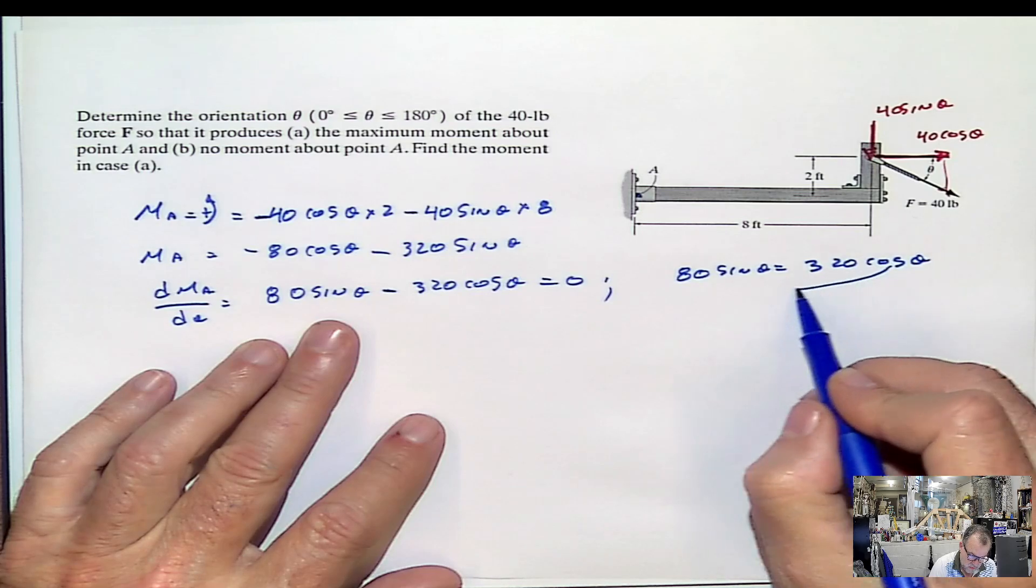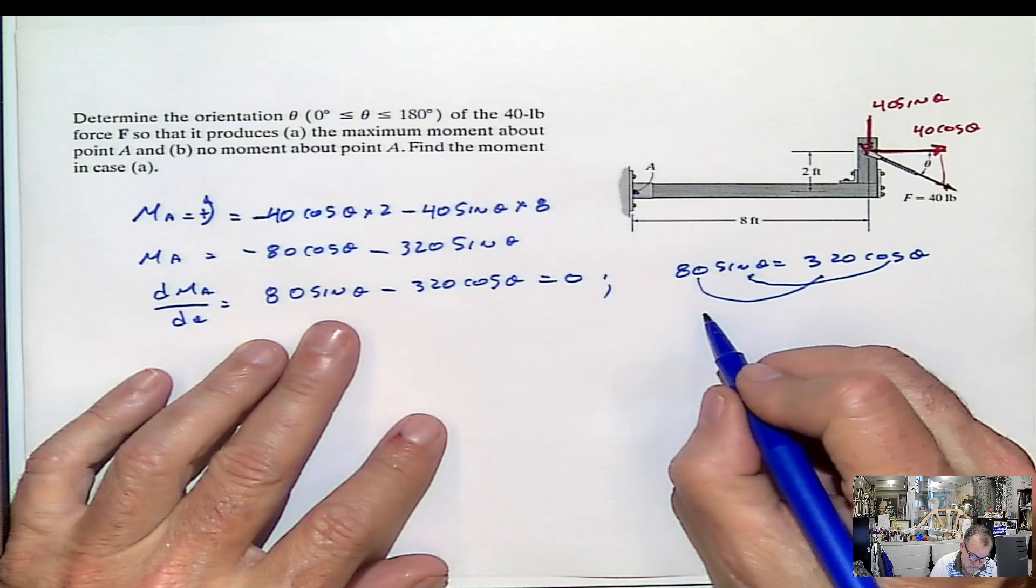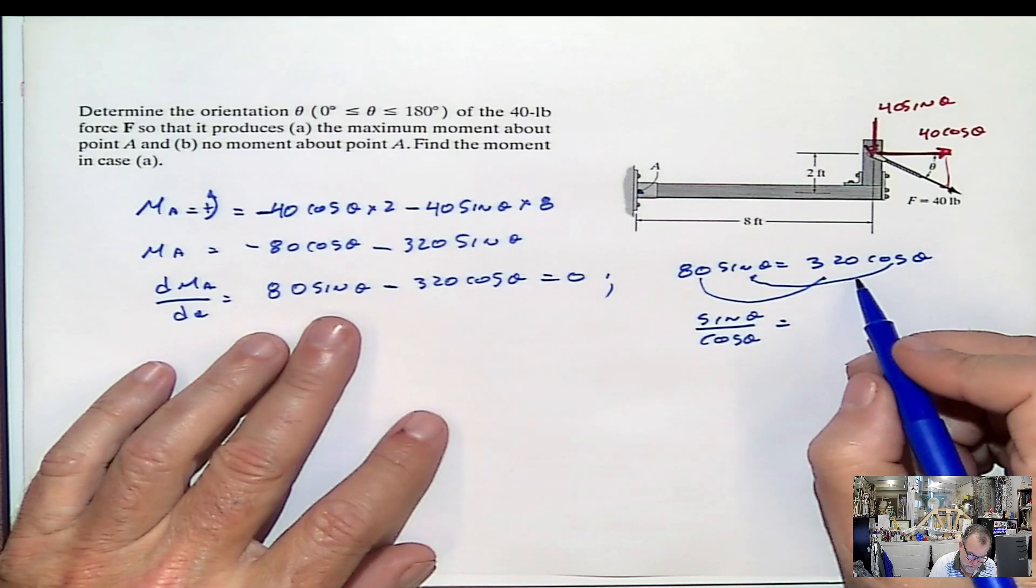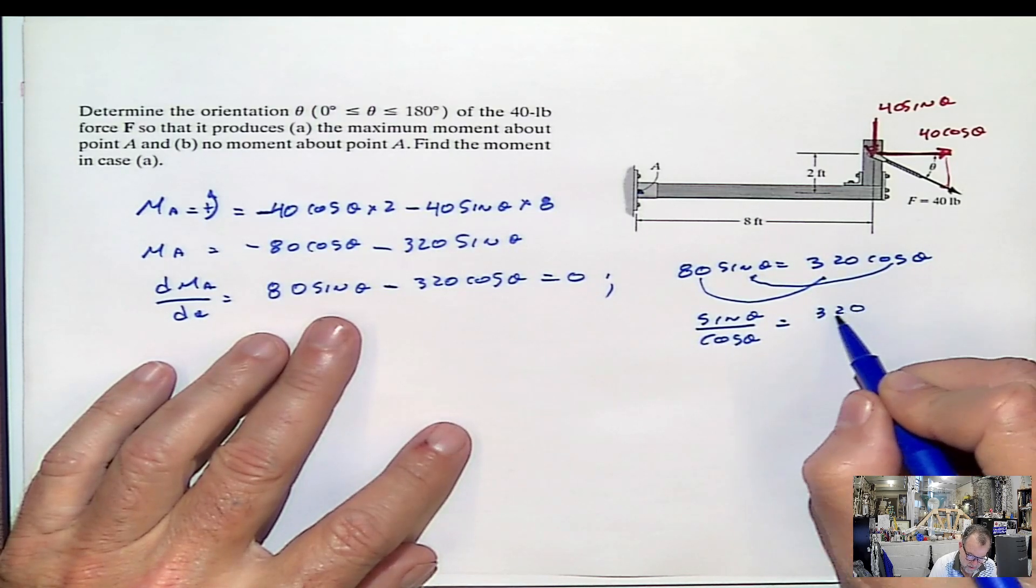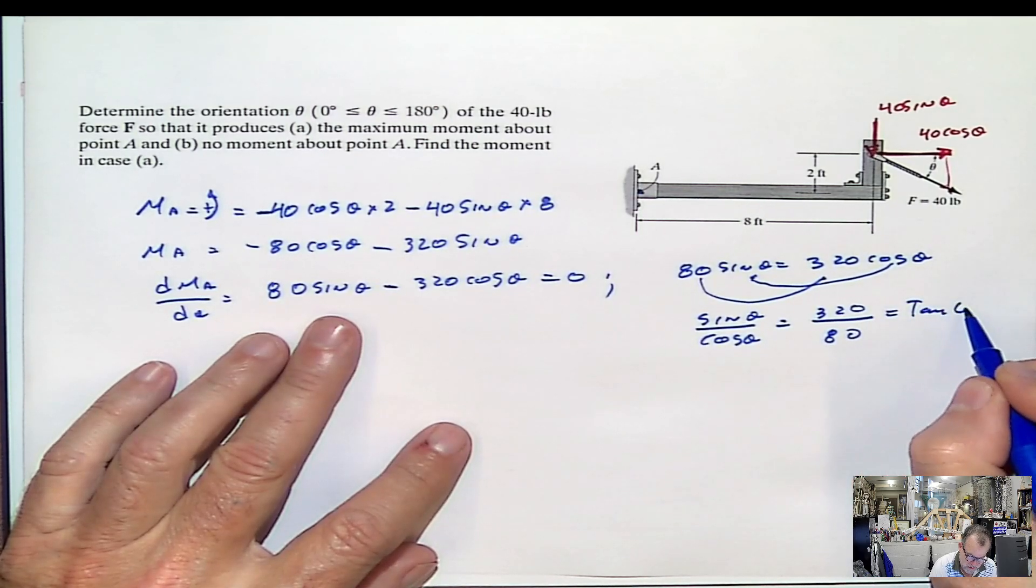And then I'm going to divide the cosine here. And I'm going to pass this divided to the other side. So sine of the angle divided by cosine of the angle is going to be equal to 320 divided by 80. And this is the tangent of the angle.